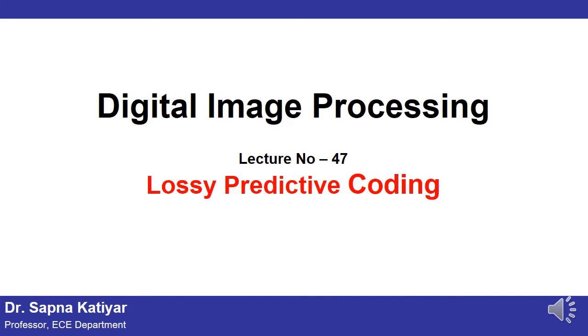Let me remind you that in previous lectures you have studied about what is image compression, how many types of image compressions exist, which is actually two types, lossless image compression and lossy image compression. Today you are going to study about lossy image compression technique, which is predictive coding.